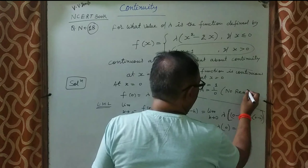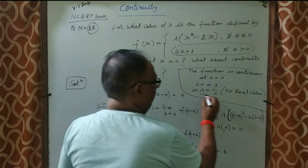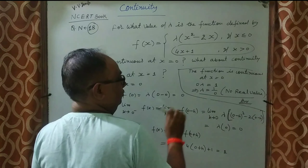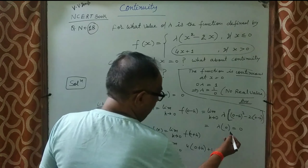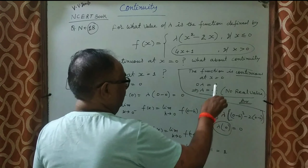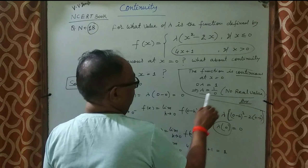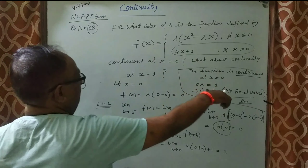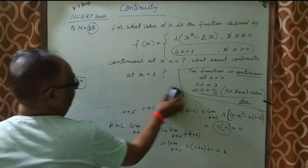So if the function is continuous at x = 0, then λ has no real number value. This is because RHL = 1 while LHL = 0, and setting 0 · λ = 1 yields λ = 1/0 — no real solution. Now we check continuity at x = 1.